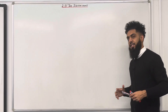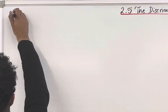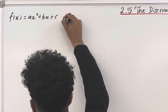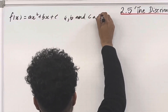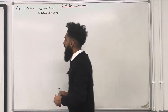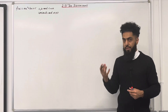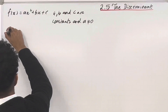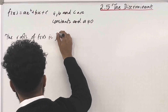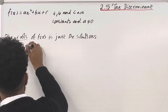I'm going to start this teaching video with the function f of x which represents a quadratic. So we have f of x equal to ax squared plus bx plus c, where a, b and c are constants and a is not equal to 0. The roots of f of x are just the solutions of f of x equal to 0.